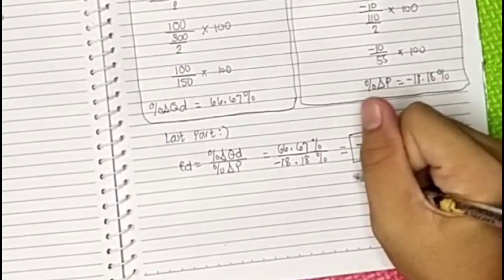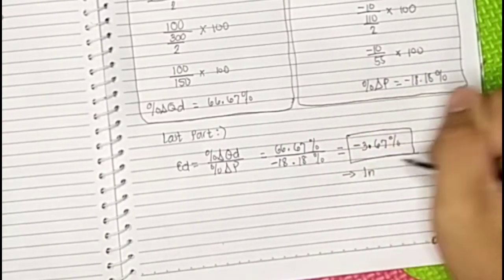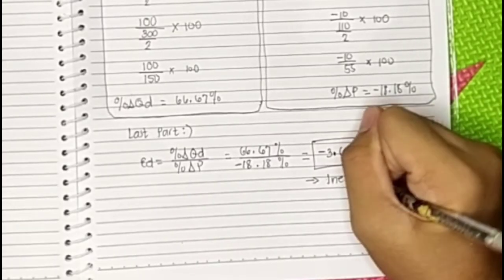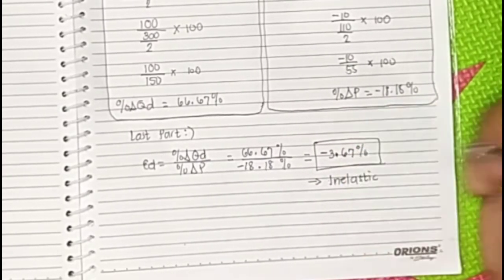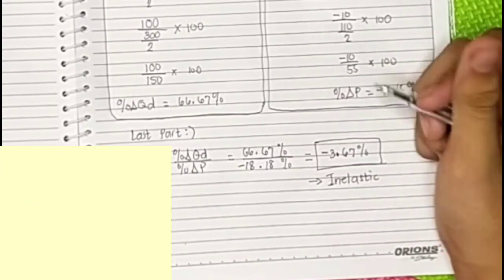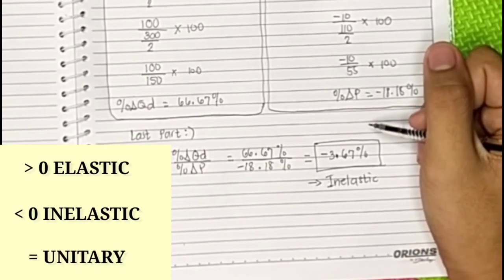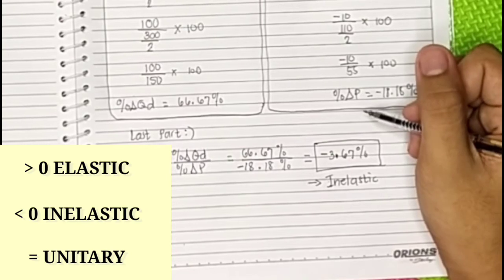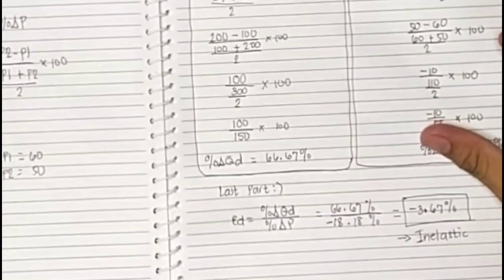Since the result is negative 3.67, it is inelastic, meaning it is less than zero. If it were positive, it would be elastic. If equal, it is unitary. That is one of the rules in price elasticity of supply or demand.